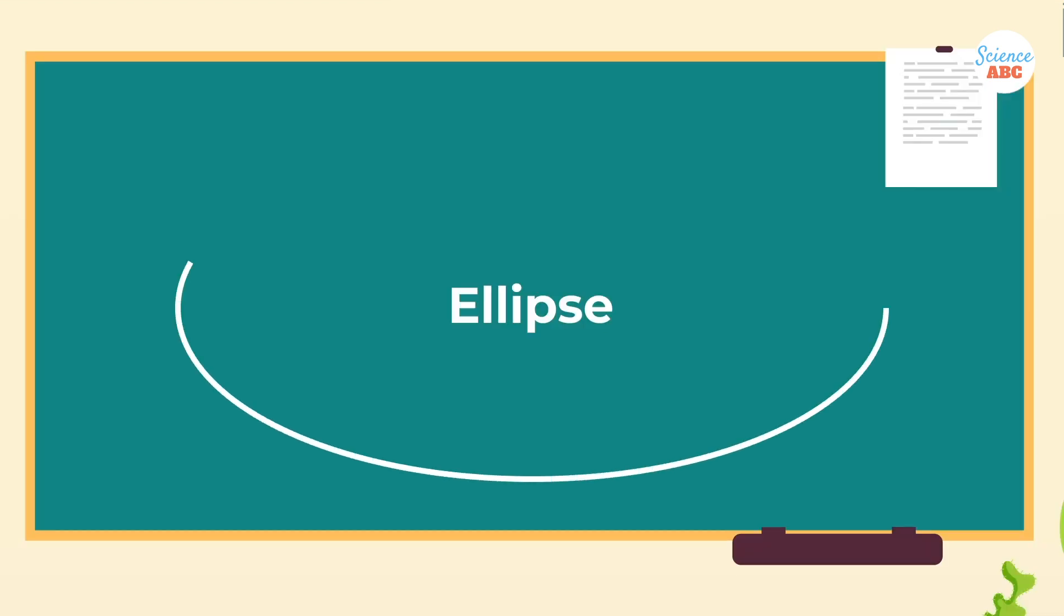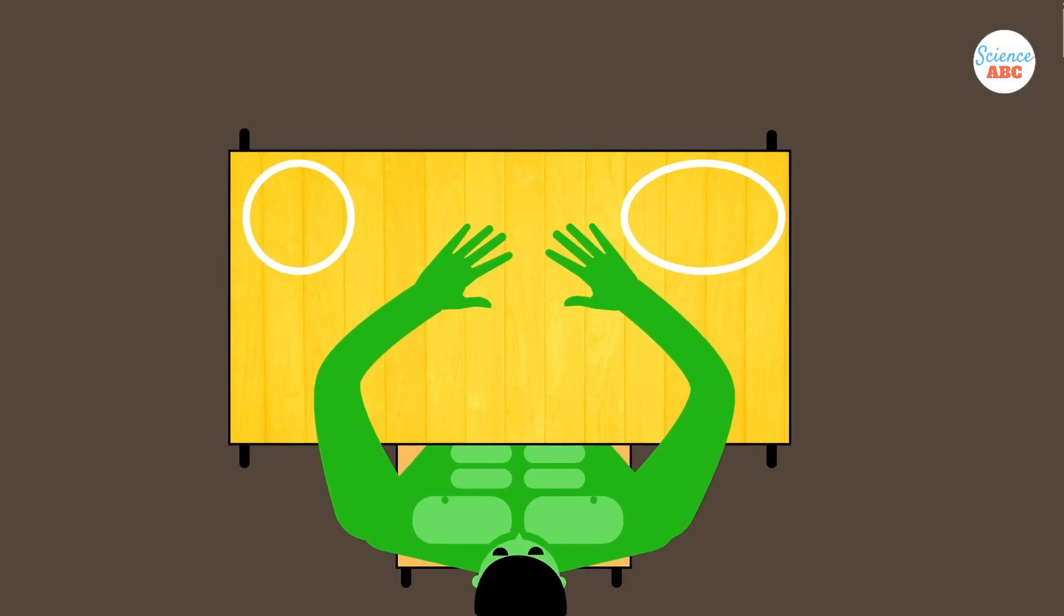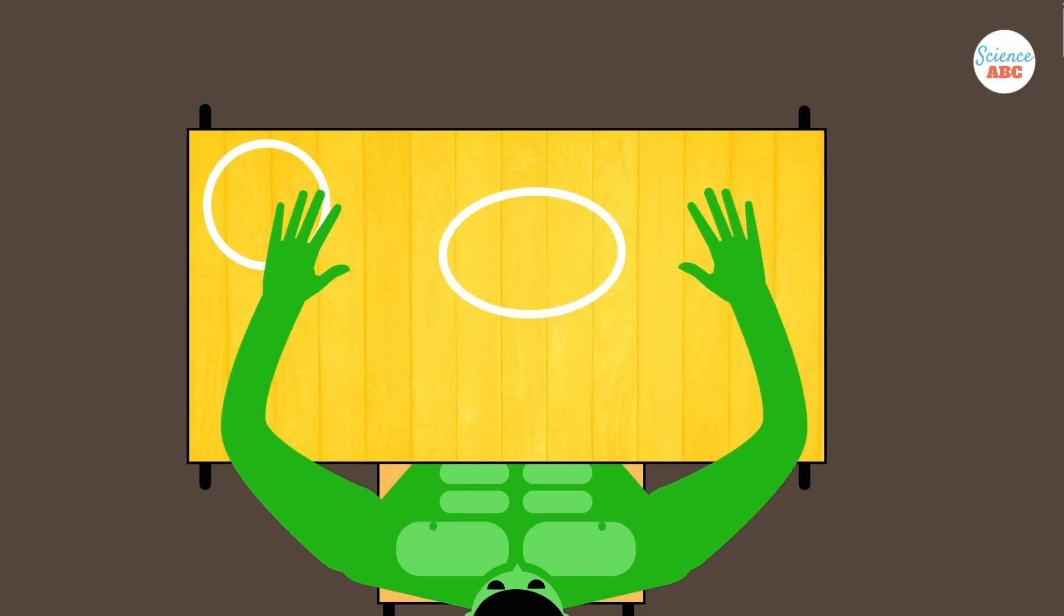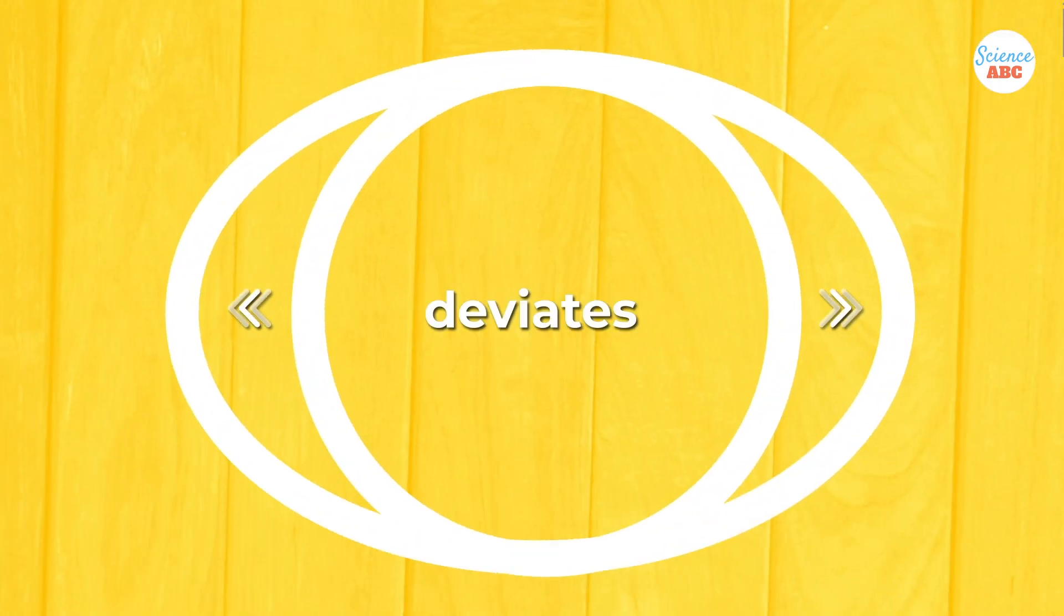An ellipse is a symmetrically shaped, closed oval. It has two points, called foci, which act as a combined center for an ellipse. This ellipse has an important property called eccentricity. Simply put, eccentricity tells how much the ellipse deviates from a perfect circle.